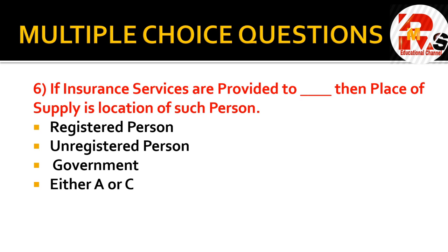Question number six: if insurance services are provided to blank, then the place of supply is the location of such person. Insurance services are provided to any kind of registered person — so the right answer involves a registered person determining the place of supply.